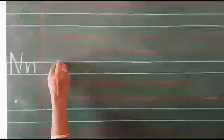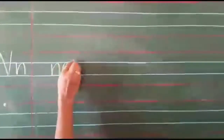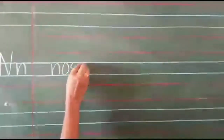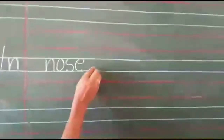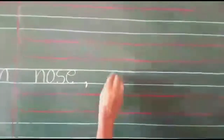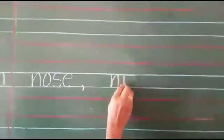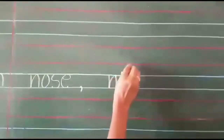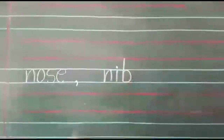So we will write the spelling of nose: N, O, S, E — nose. Comma. N, I, B — neve.